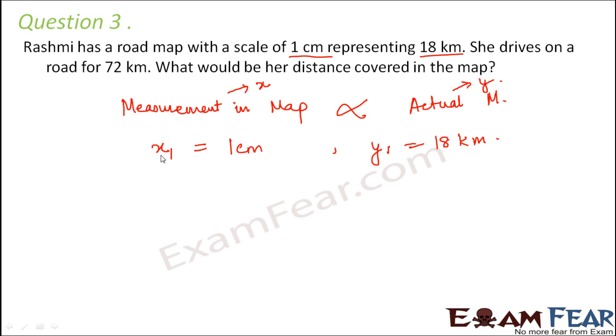What would be the distance covered by her on the map? That is not known. So x2 is not known. And y2 is 72 kilometers. This is in centimeters. If you don't convert it into kilometers, you will get direct answer in centimeters. That's because here the relationship is x1 by y1 is equal to x2 by y2. Or we can say x2 is equal to x1 by y1 into y2.